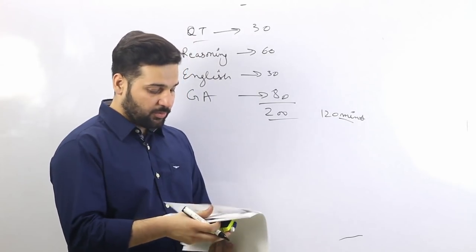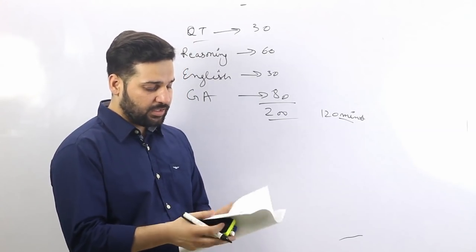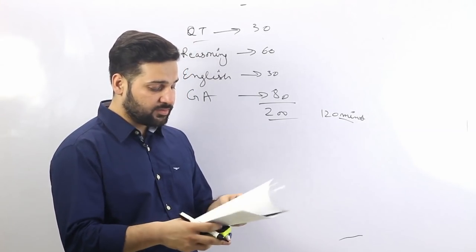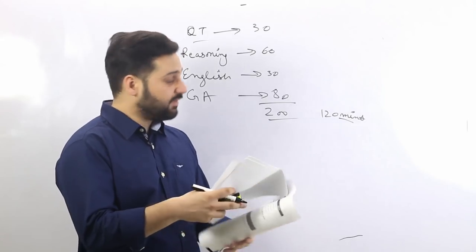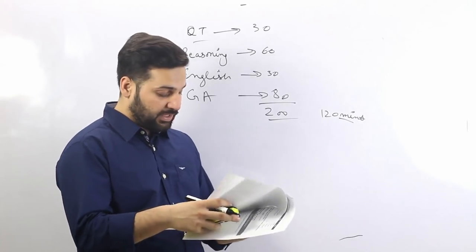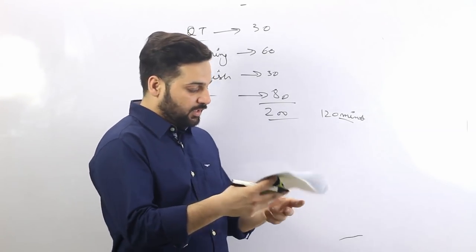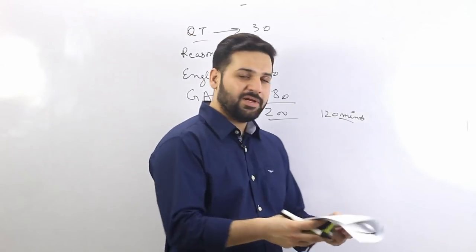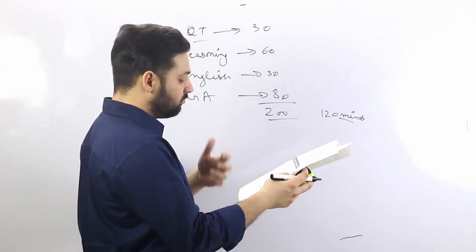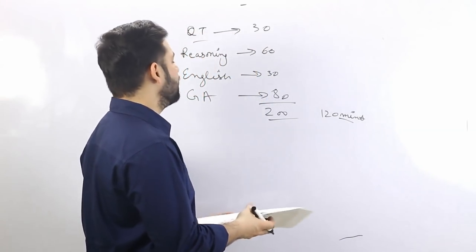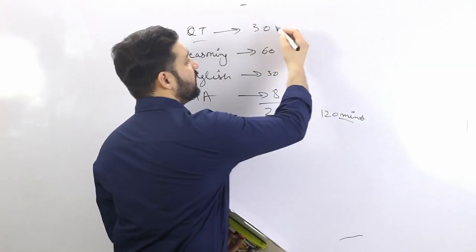Looking at last year and the previous two years, there were five questions from inequalities, 15 questions from data interpretation, then simple and compound interest, time and work, mixtures, profit and loss — these types of questions were there.